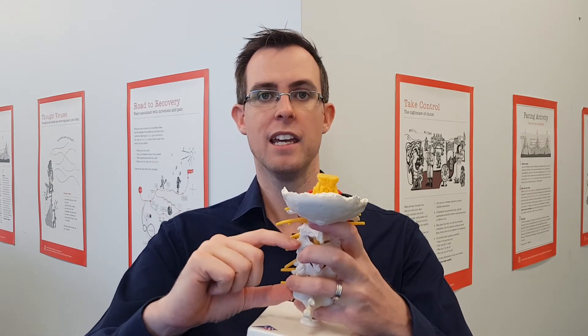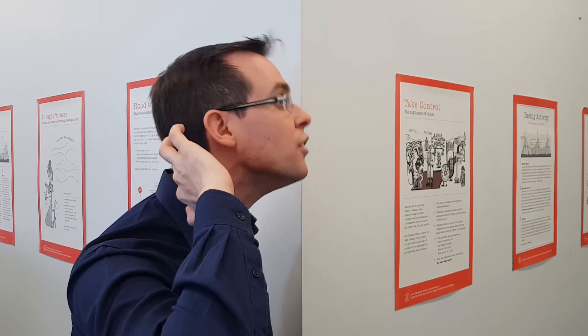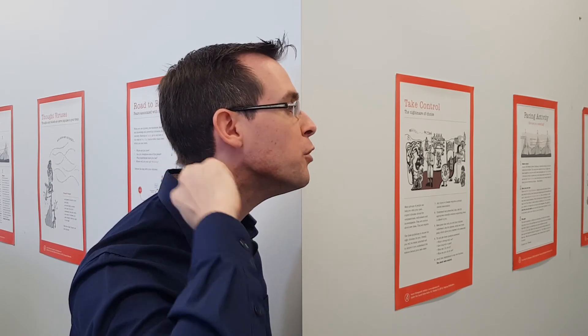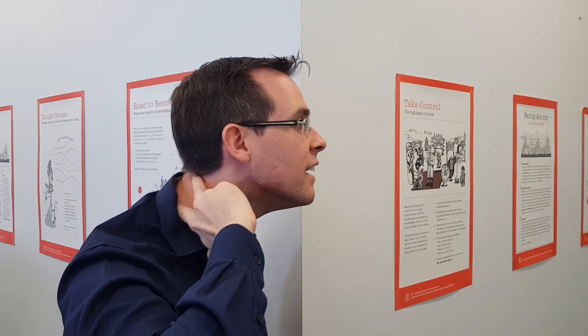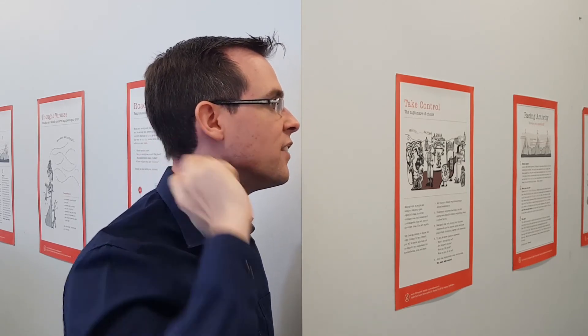A common thing we often see is called forward head posture, where basically the lower part of the neck is in a more flexed position and the upper part of the neck is in a more extended position. So it looks a little bit like this — you can see the top of the neck is kind of chin out, which is a looking-up movement, and the bottom of the neck is a flexion movement: flexed here, extended there.